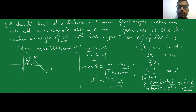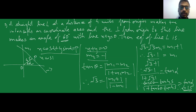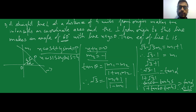Now with alpha equal to 15, I substitute into the normal form equation: x·cos(15°) + y·sin(15°) = 4. Write 15 as 60 − 45, then apply the cos(A − B) and sin(A − B) formulas to expand cos(15°) and sin(15°). Simplify to get the final answer.